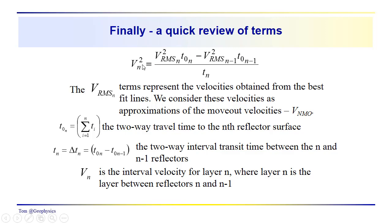But let's think about what it is that you need to do and just take a quick review of some of the terms. This is your V_n squared, and we've shown how we got this relationship for the interval velocity squared for layer n. This VRMS velocity represents the velocities obtained from the best fit lines.